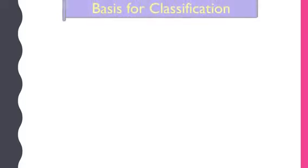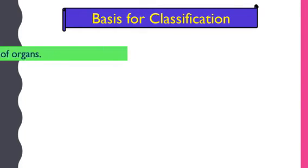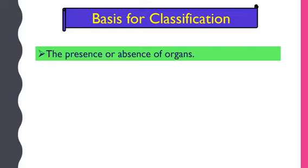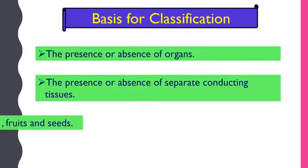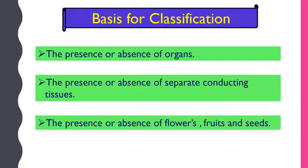So let's start with kingdom Plantae. For the classification, the group of autotrophic living organisms having eukaryotic cells with cell walls are placed in the group of plants. Living organisms of the kingdom Plantae are the main source of food for all other living organisms. Now, which are the basic characteristic features for the classification?